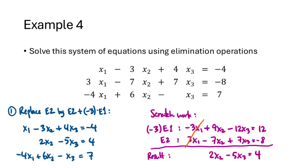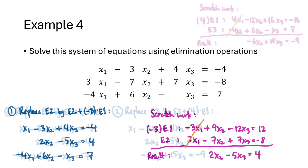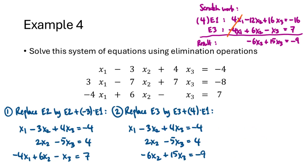We still need to replace the third equation to eliminate the x1 in that one. If we multiply the first equation by 4 and add the result to the third equation, the x1s will cancel out and we'll get a new third equation without any x1. Now we have a new system: the original first equation, and new replaced second and third equations that no longer have x1 in them.